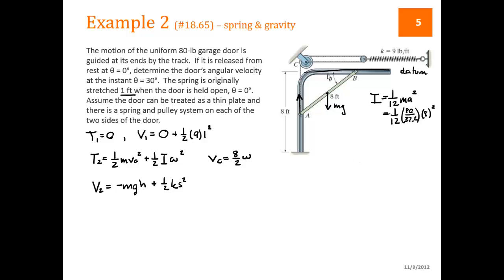So h is this distance below the datum that takes us to the center of mass. So h is going to equal, this hypotenuse is going to be 4, 4 times the sine of 30. And s is a little bit more complicated, because s requires us to look at the pulley system.